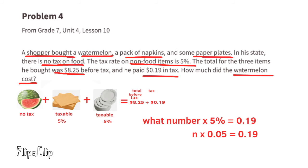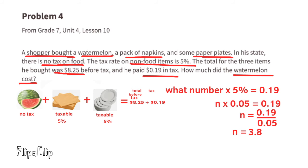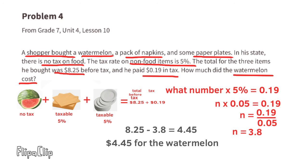To find the total price of the napkins and paper plates: what number times five percent equals $0.19? The equation is n times 0.05 equals 0.19. Dividing both sides by 0.05, n equals 3.80. The price of the watermelon is found by subtracting: $8.25 minus $3.80 equals $4.45. The watermelon cost $4.45.